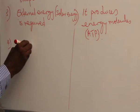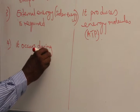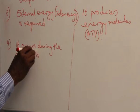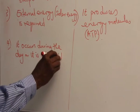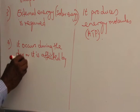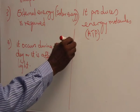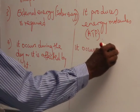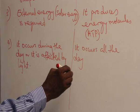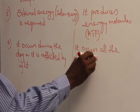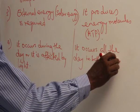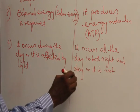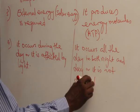Photosynthesis occurs during the day — it is affected by light. Respiration occurs all day, that is, both night and day, and it is not affected by light.